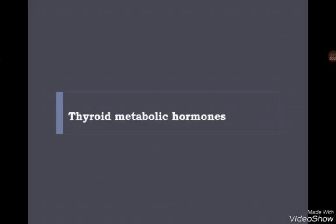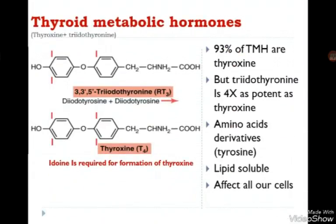Now let's start with the physiology of the thyroid metabolic hormones. We're going to talk about the synthesis, secretion, mechanism of action, and regulation of thyroid hormones. Thyroid metabolic hormones are thyroxine and triiodothyronine. These hormones are derived from the tyrosine amino acid, which contains a benzene group. The presence of the benzene group makes them lipid soluble. Another important note is that thyroid metabolic hormones contain iodine — the thyroid gland is the only place in our body that can metabolize iodine.